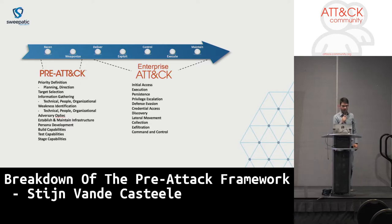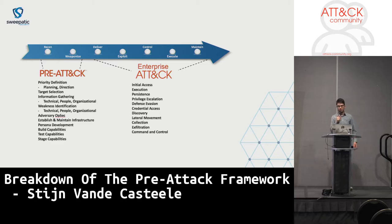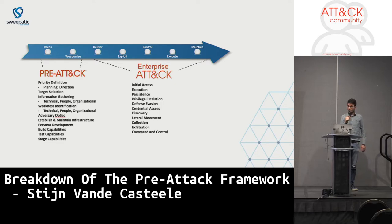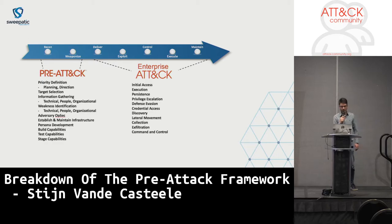Pre-attack, to position that in the attack planning process or the kill chain, is at the beginning. It's focused around hostile reconnaissance — preparing adversaries and preparing their attack. They assess the likelihood of their success, but also the likelihood of being detected. So they take time to collect as much information as possible before they proceed in the attack planning process.